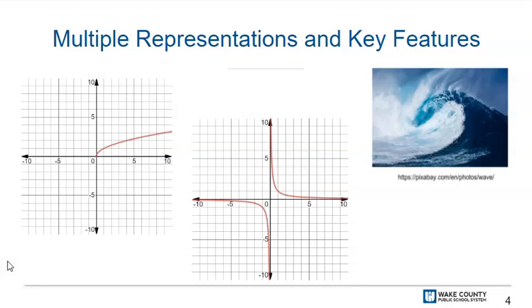You will use an inverse variation function to model the relationship between the speed of the wave and the time that it will take for the wave to reach land. You will create tables and graphs to represent these functions, and then you will identify and interpret key features of the functions.